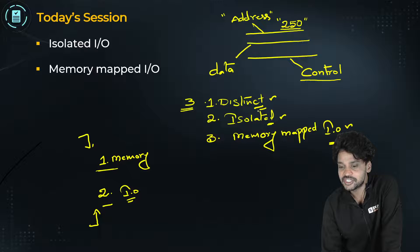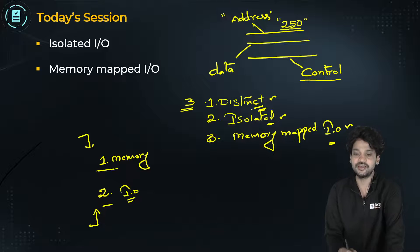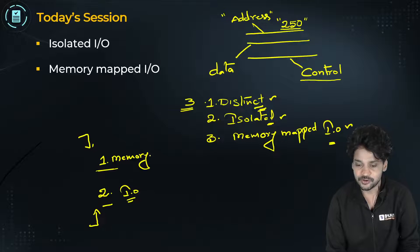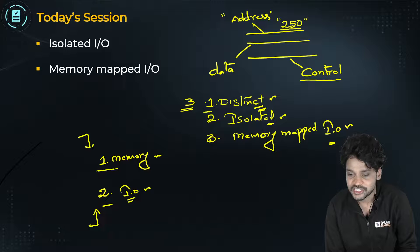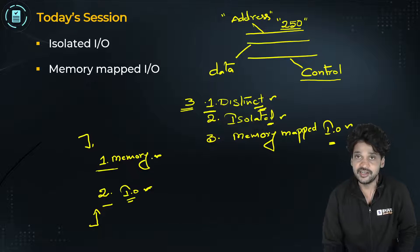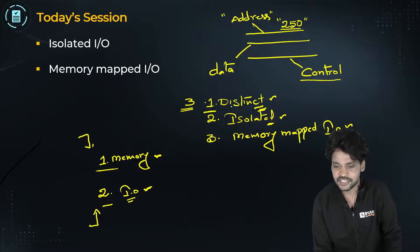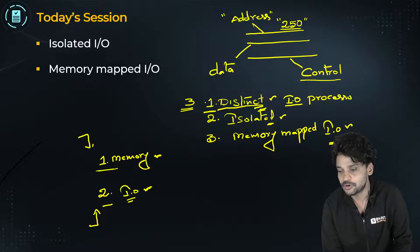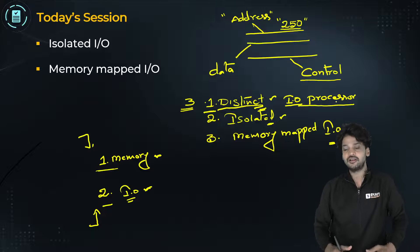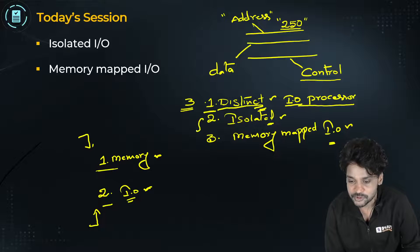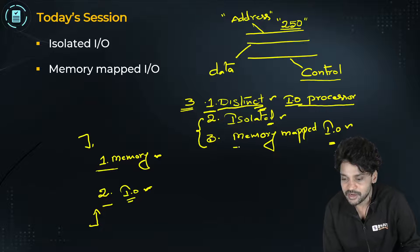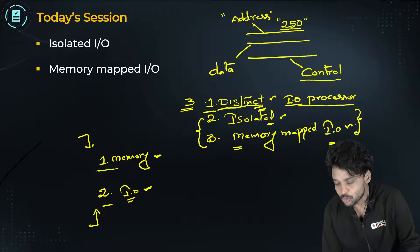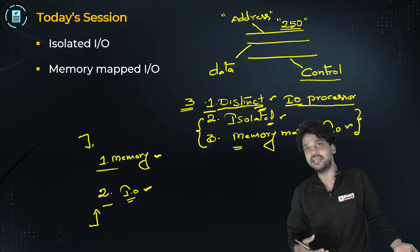What is distinct IO? Distinct IO means two separate bus systems are used by the CPU — one for memory and one for IO. Whenever the CPU wants to make a transfer to IO devices it uses one bus system, and for memory it uses another. However, distinct IO requires a separate IO processor, and since using a separate IO processor is not economical, it cannot be implemented in all systems. So instead, we follow either isolated IO or memory mapped IO.